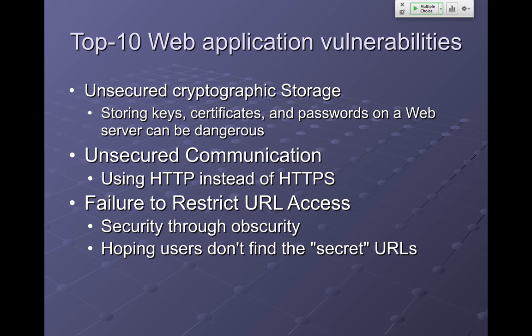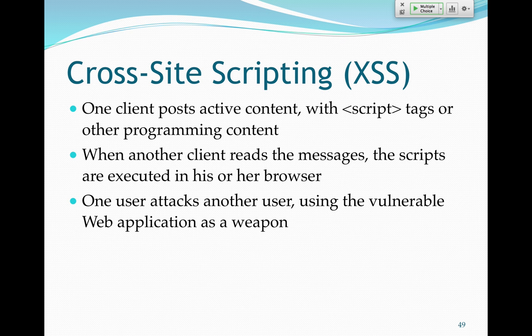Unsecured cryptographic storage is where you use weak keys or old techniques of encryption. Implementing cryptography badly is extremely common — even people that implement cryptography tend to do it wrong and leak out secrets. Unsecured communication is where you just don't bother to encrypt things at all, like passwords. Failure to restrict URL access is another example — magic URLs that give you privileges you shouldn't have, where you just hope people won't find them instead of actually having an authentication and permission structure to block them.